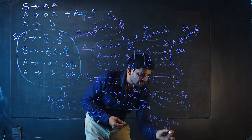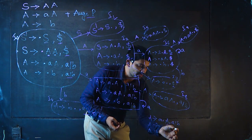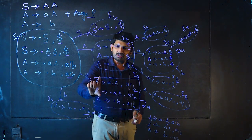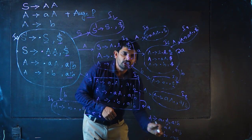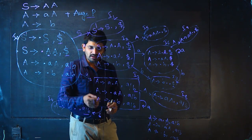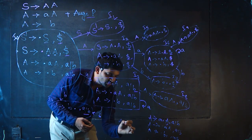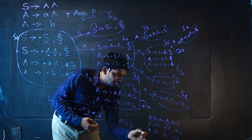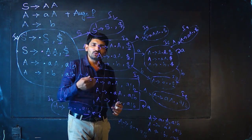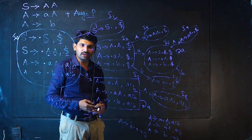Filling the parse table: I0 on small a goes to I3, so write S3 (shift). I0 on small b goes to I1 — write S1. I0 on capital A goes to I2 — write 2 in the goto part. For I1, it appears to be a final item, but it is an augmented production, so write: I1 on dollar is accepted. For I2: on capital A goes to I5 — write 5 in goto; on small a goes to I6 — write S6; on small b goes to I7 — write S7.